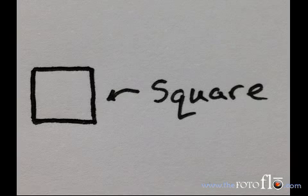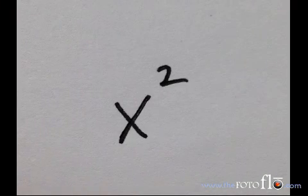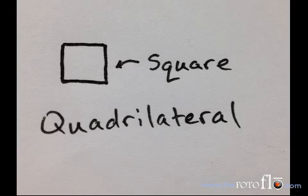This is a square. This is x squared. Because it has four sides, a square can also be called a quadrilateral.